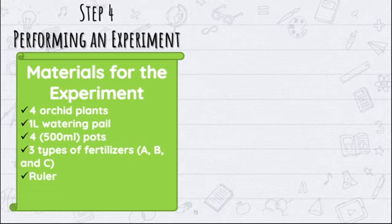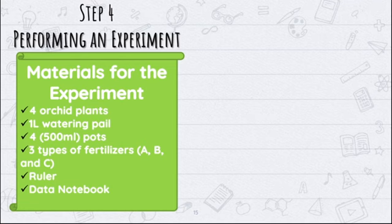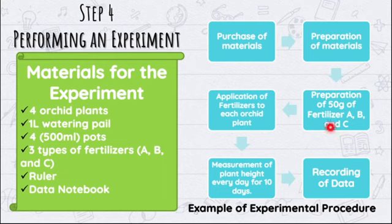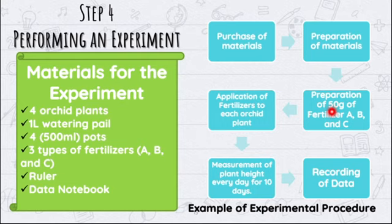We will use the ruler to measure the height of the plant and a data notebook to record all of our observations. An example of experimental procedure will be in a flowchart manner. First, we need to purchase the materials. We need to prepare 50 grams each of fertilizer A, B, and C. They should be equal amounts because we are identifying which among the three is the best. Hindi pwede yung magkakaiba-iba ng amount — the amounts must all be equal.